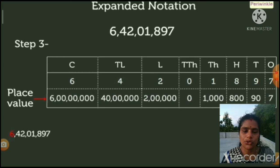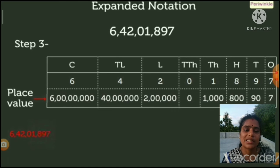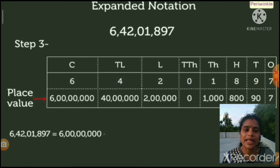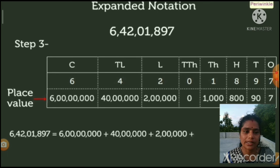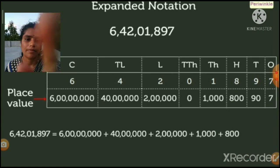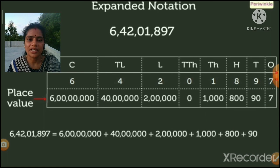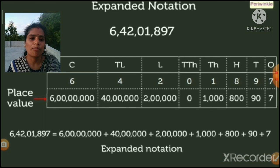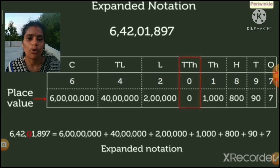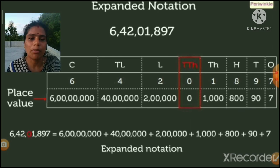Step three: six crore forty-two lakh one thousand eight hundred ninety-seven is equal to six crore plus forty lakh plus two lakh plus one thousand plus eight hundred plus ninety plus seven. This is the expanded form.